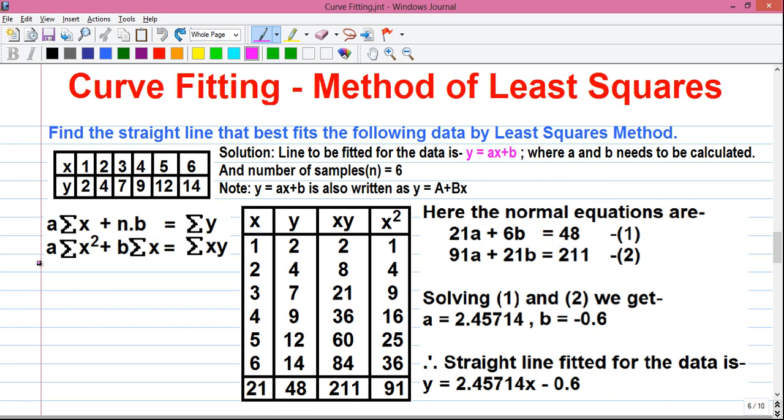In our equation number 2, that is a into sum of x square. So sum of all x square values is 91 written here. So that equals 91a plus b into sum of x. Sum of x is 21, so that is 21b equals to sum of xy. So sum of all x into y values is 211. So that equals 211. This is our equation number 2.